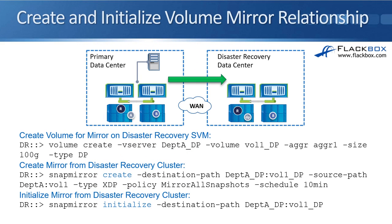Next we're ready to create and initialize the volume mirror relationship. This is all configured on the destination site. When you do your configuration for SnapMirror DP mirrors at the command line it's done on the destination and the data is going to be pulled over from there. When you configure it in the GUI you actually configure this on the source cluster — I'll show you that with a lab demo later. The first thing we need to do on the destination cluster is create the volume that we're going to be replicating the data into.